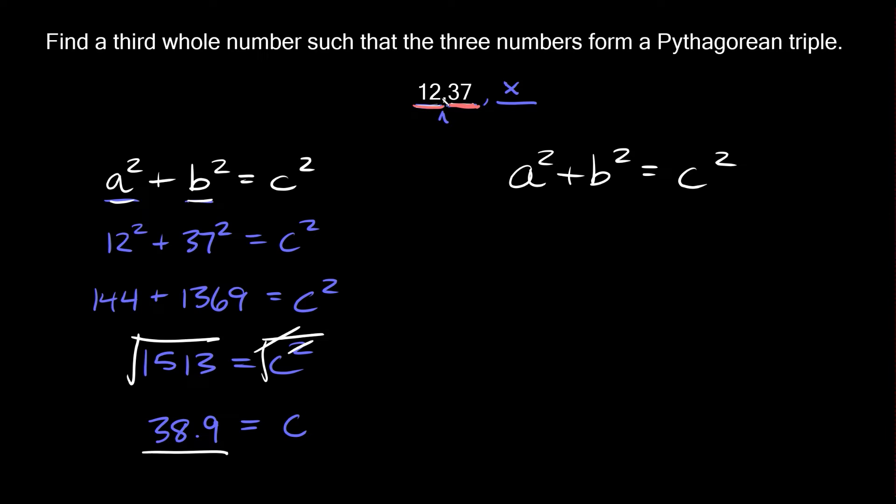12 is obviously one of the short sides because it's smaller than 37 so we can plug it in for a. We're gonna have 12² + b² = and this time we're gonna assume that 37 is the hypotenuse, so 37².